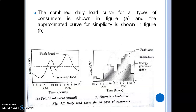The area under the load curve represents the energy generated in the period under consideration. The energy consumed by the customer is given by the integral from 0 to 24 of the load in kilowatts multiplied by dt. The average load of the power station is obtained by dividing the area under the load curve by the total number of hours — that is, 24 hours for a daily load curve.